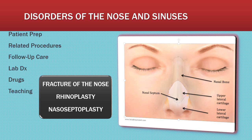Another surgical procedure outlined in your textbook is a nasal septoplasty or submucous resection. This may be needed to straighten a deviated septum when chronic symptoms are occurring. Neurosurgical procedures for severely deviated septums include an actual removal of part of the septal cartilage, which is then straightened separate from the body and replaced into the nose along with sutures and struts to keep it in place.